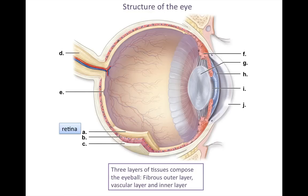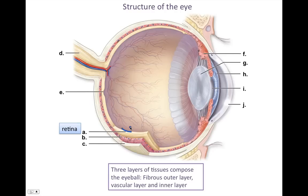Working ourselves from the inside out, the first layer we see is called the retina, and the retina is on the very inner layer of the eyeball. Next, we have the choroid layer, which is one layer outside of it. You can see it's colored pink with a lot of red and blue dots in there, and we'll explain what that is in a little bit.